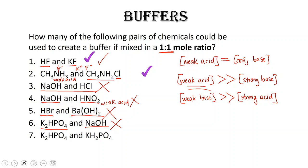For the last one, we've got two salts, but notice one has one extra hydrogen than the other. So here we have a weak acid, and here we have the conjugate base. Because we have the weak acid and the conjugate base together, if we have both of these in a one-to-one mole ratio, we can have a buffer.